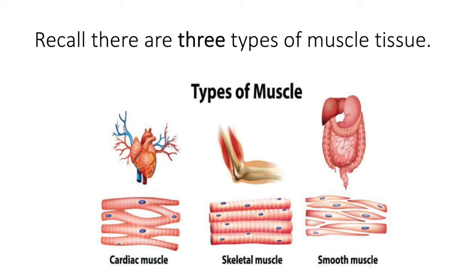Skeletal muscle tissue is found in all of your voluntary muscles of your body. The cells are characterized as being long and cylindrical and multinucleated. Overall, the tissue appears striated — a banded or striped appearance. In this module, we're going to explore why that is. There's an intracellular structure called the sarcomere that gives skeletal muscle tissue, and actually cardiac muscle tissue as well, that striated appearance.